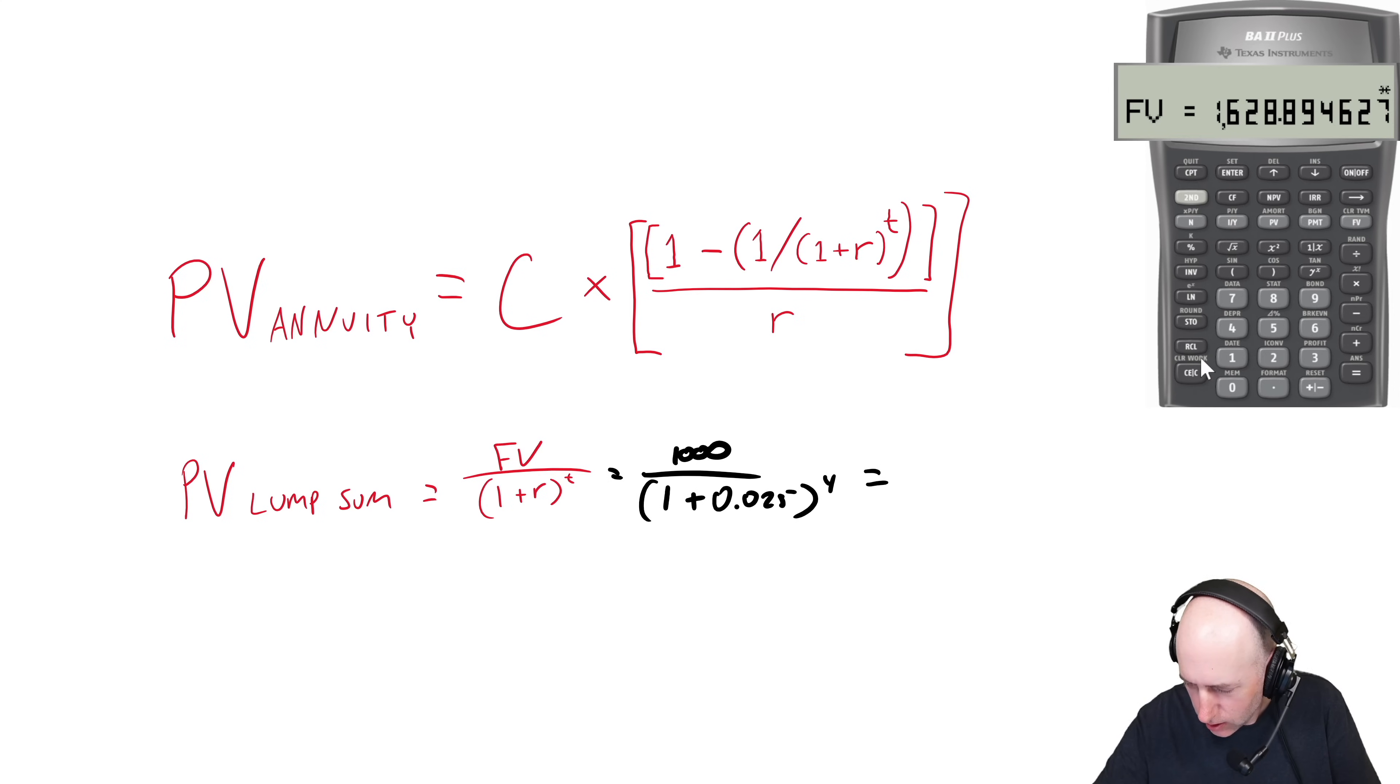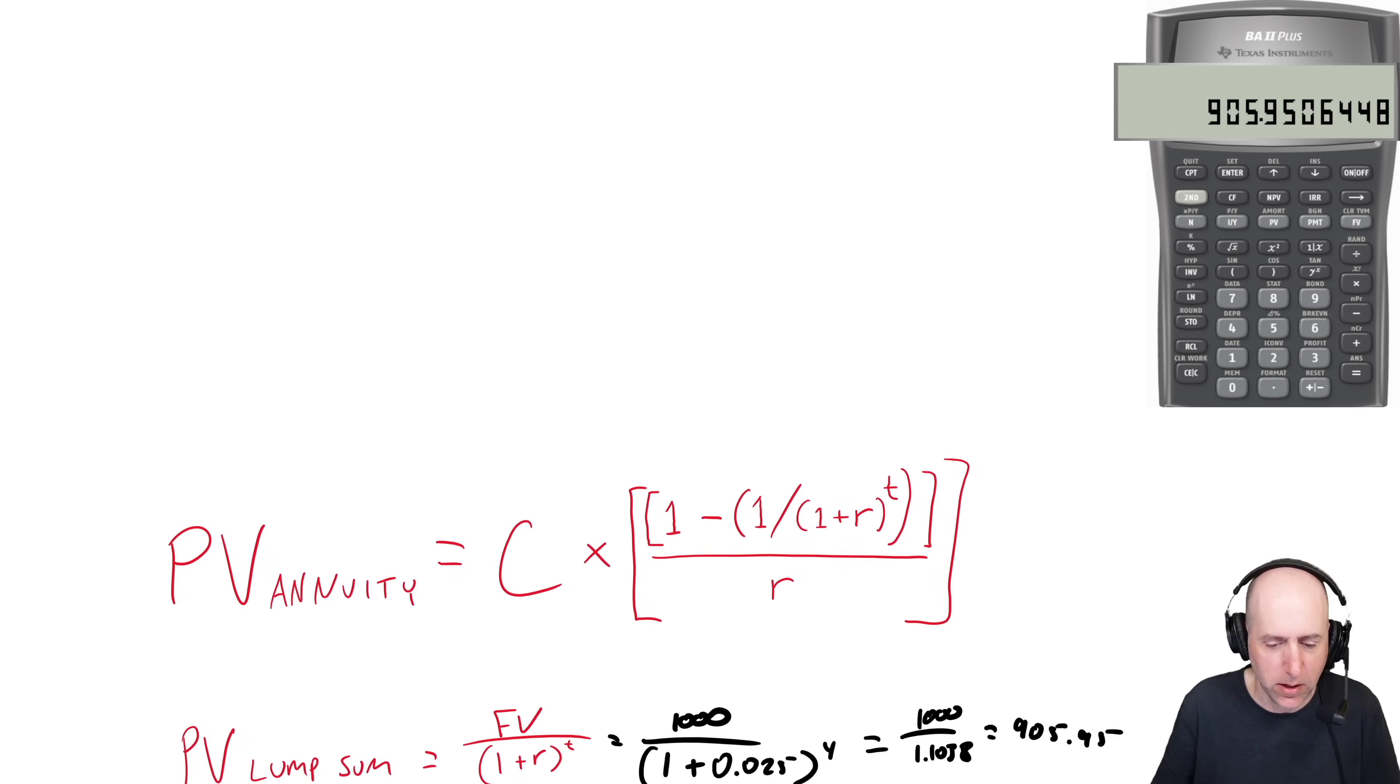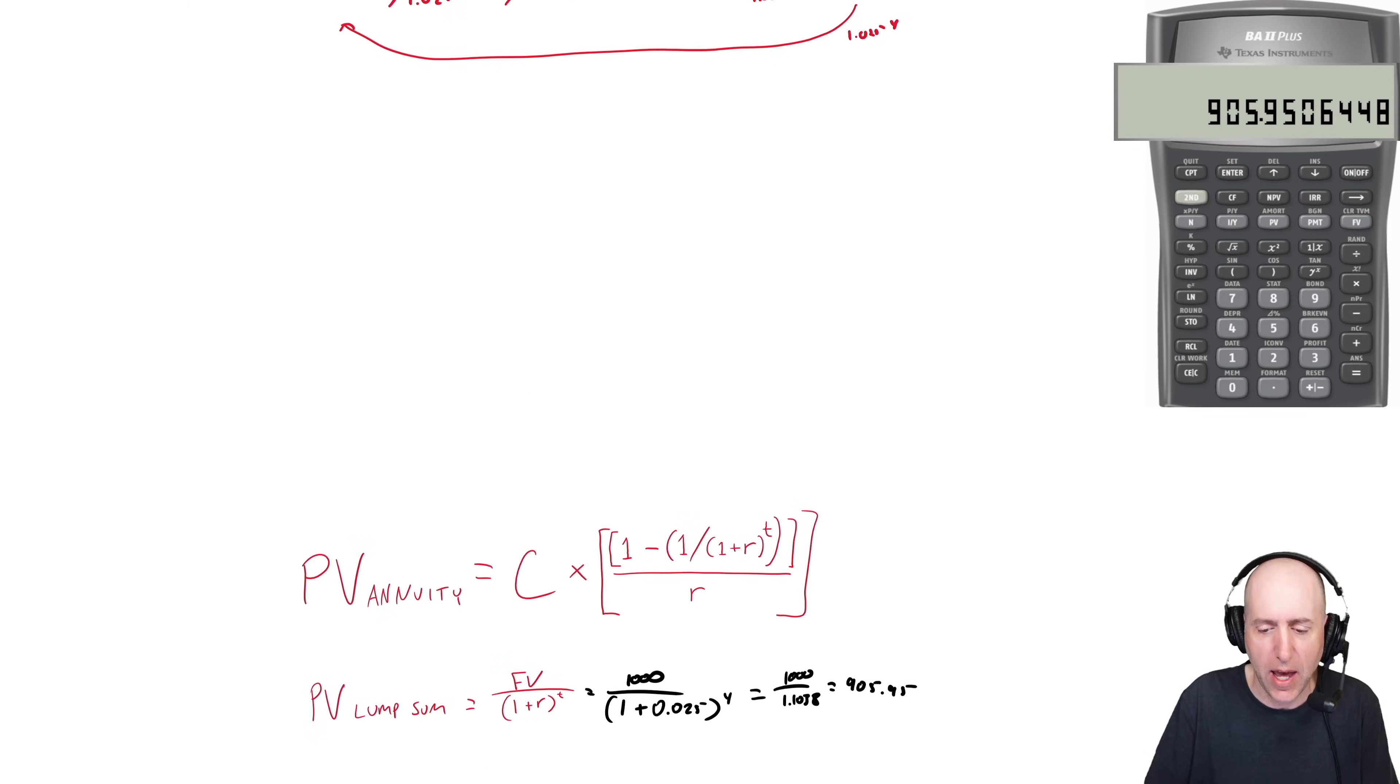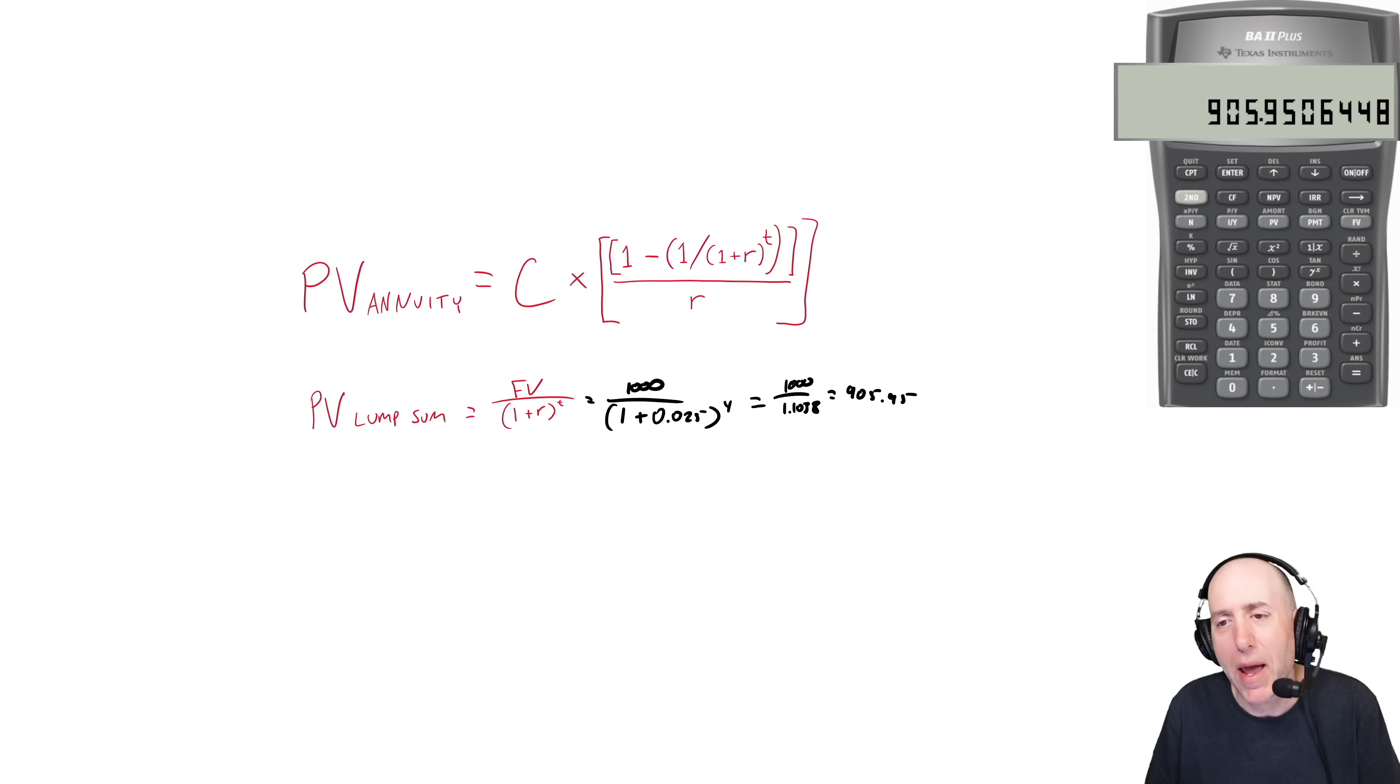Which is our yield to maturity rate, 5% per year divided by two, because we're getting everything with a bond to semi-annual. So one plus 0.025 raised to the power of the number of periods. Now it's two years, but that's four semi-annual compounding periods. So 1.025, that's the denominator raised to the power of four, Y to the X four, so it's 1.1. The way you do here is you go one over X and I get 0.9, and then you multiply by a thousand. So I get 905.95 as my present value of the thousand.